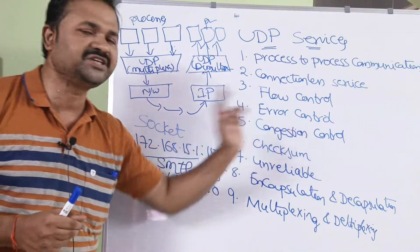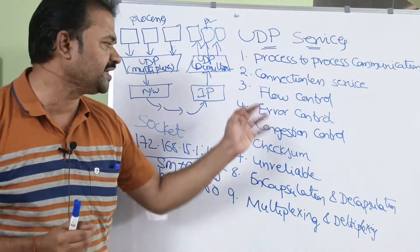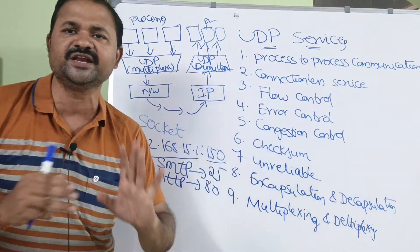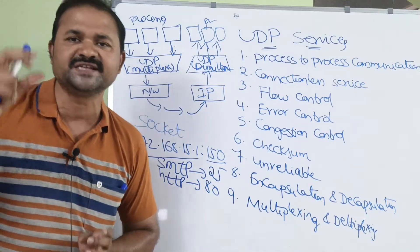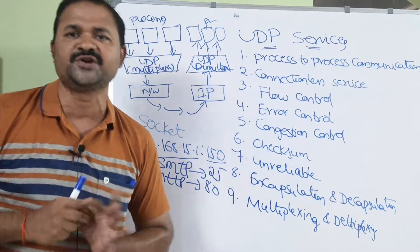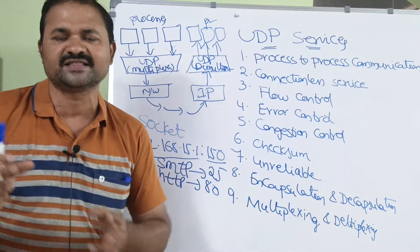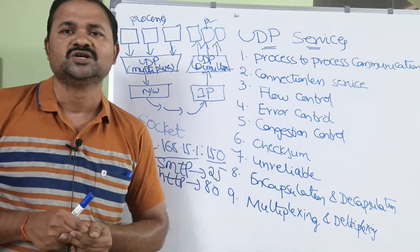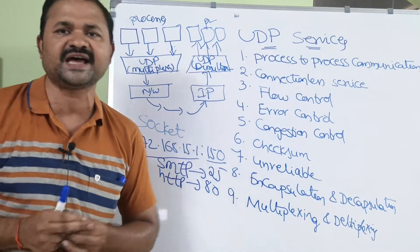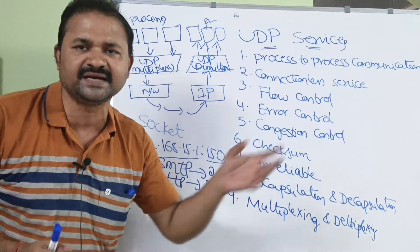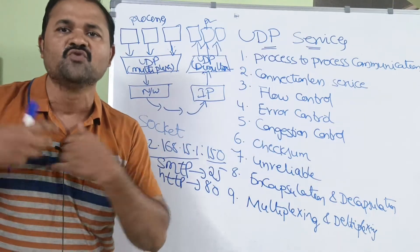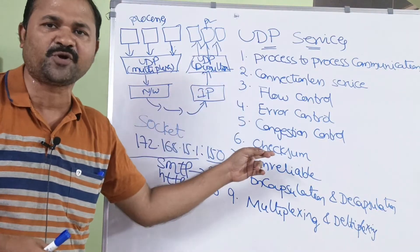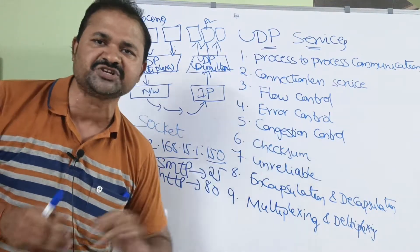The next one is congestion control. In UDP we don't have any flow control or error control — likewise we don't have any congestion control. UDP doesn't provide any congestion control. It assumes that the packets are small and contain smaller data, so there will be no congestion at the receiver side. UDP assumes that everything is going fine at the receiver side. So we can say that UDP doesn't provide flow control, error control, or congestion control.